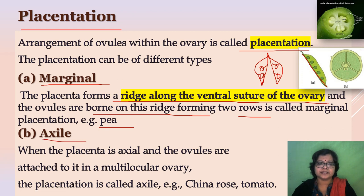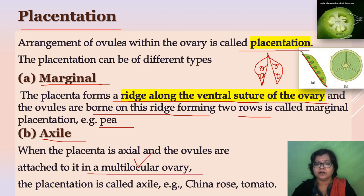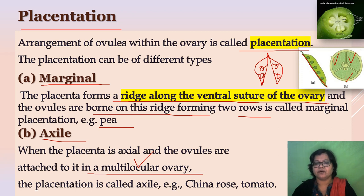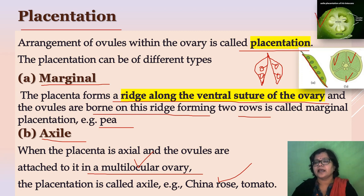The next type is axile placentation. When the placenta is axile and ovules are attached to the central axis in a multilocular ovary. Locule means chamber; multilocular means many locules. In this diagram, we can see three locules and ovules are attached to the central axis — this is called axile placentation. Example: china rose, tomato. This diagram also represents axile placentation.